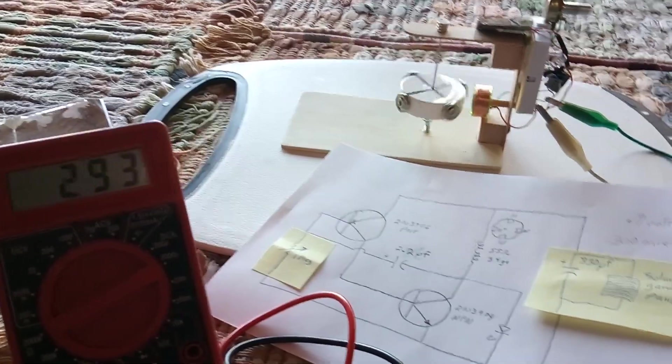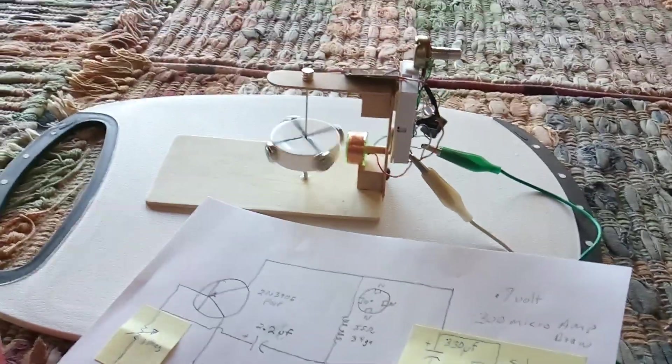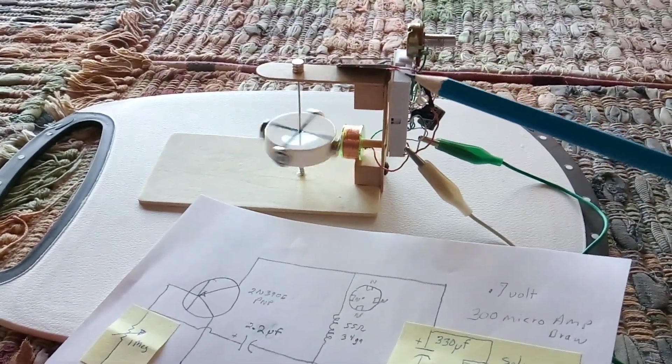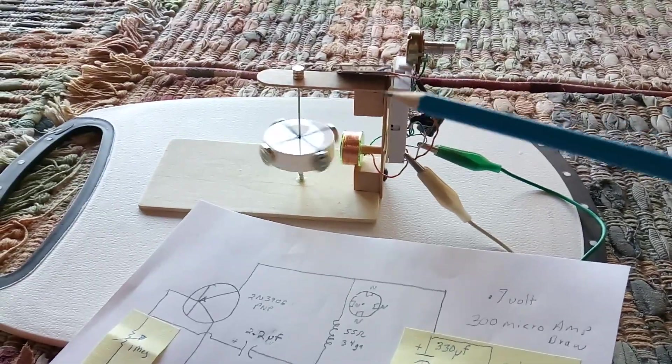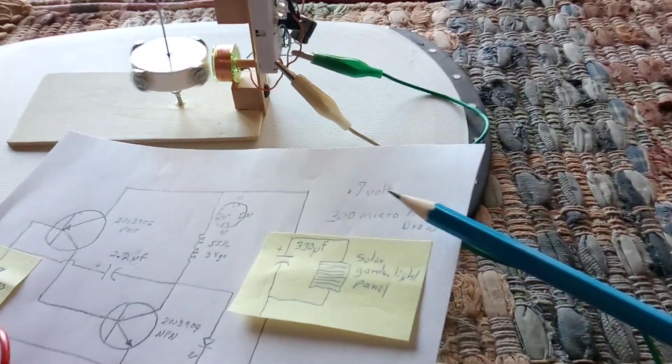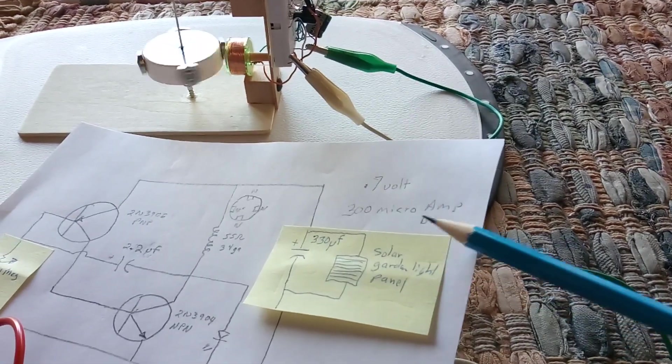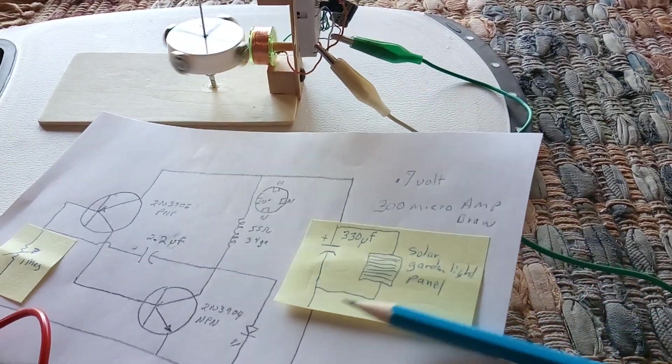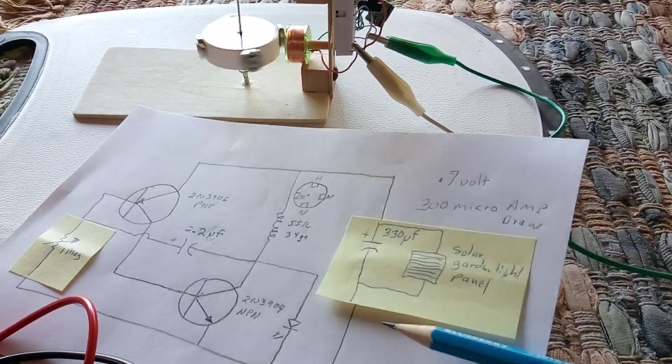It's about 300 microamps, so I do have a microamp pulse motor being run on ambient solar energy. This is where the numbers lie: 0.7 volts at about 300 microamp draw with this kind of input.